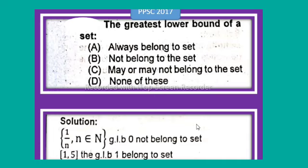Solution: Consider the set {1/n, n ∈ N}. The greatest lower bound is 0, which does not belong to the set. For [1,5], the greatest lower bound is 1, which belongs to the set. So option C is correct: may or may not belong to the set.